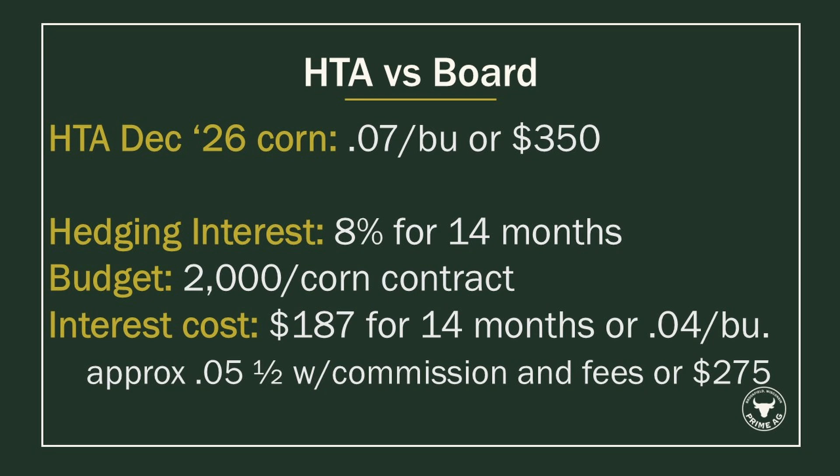Depending on your broker, there will be some commission, exchange, and transaction fees, so you might estimate about five and a half cents a bushel, or about $275 for that 14-month period.